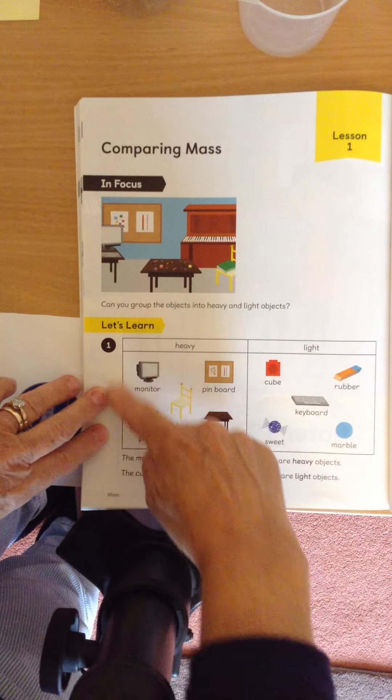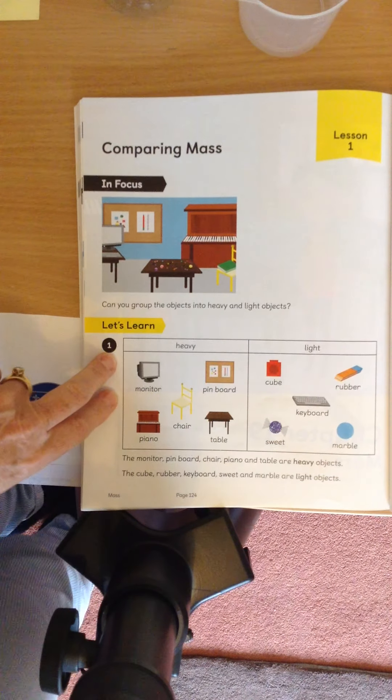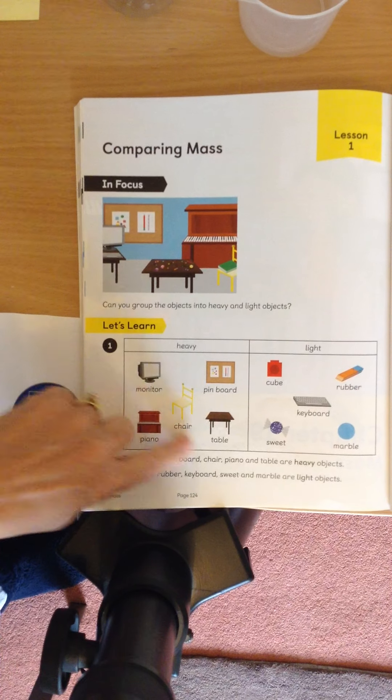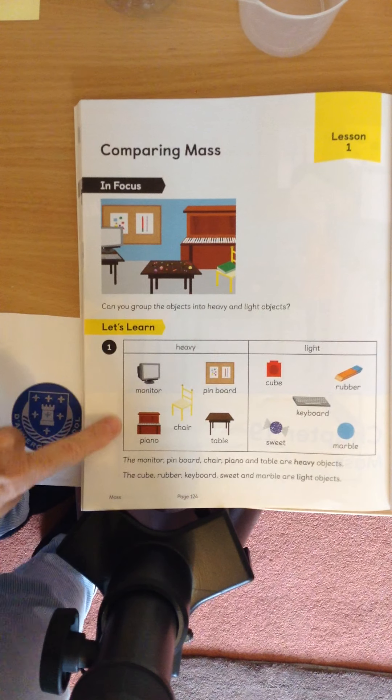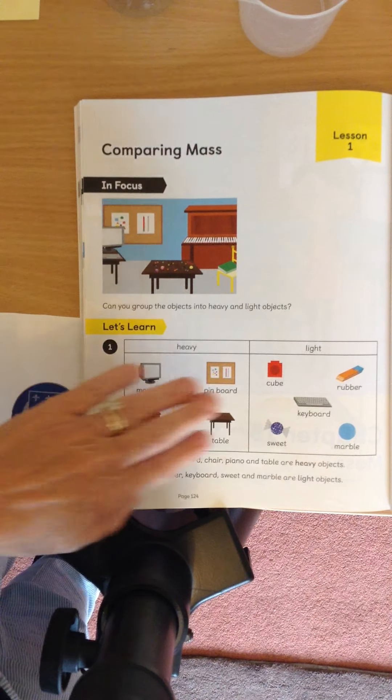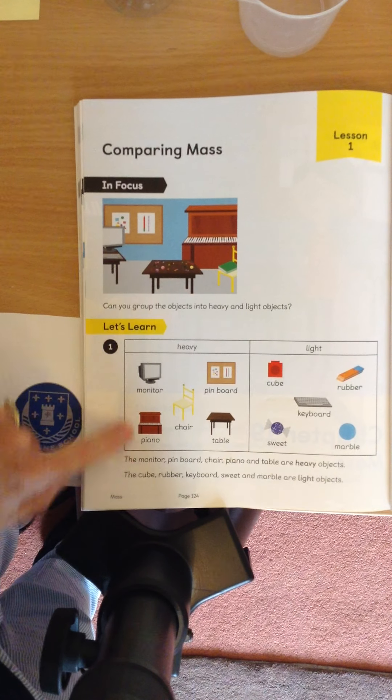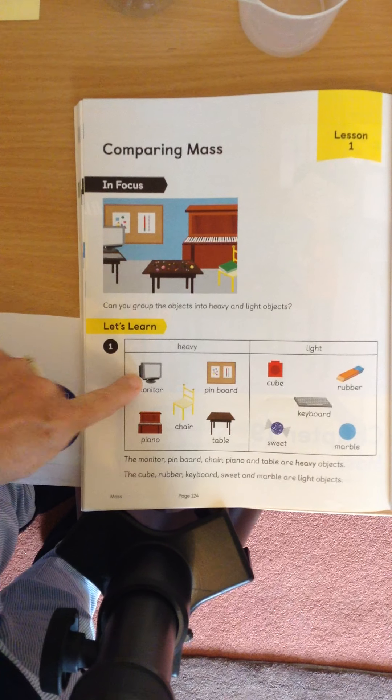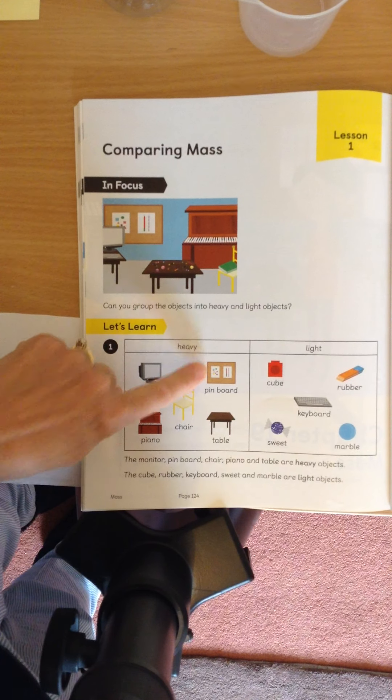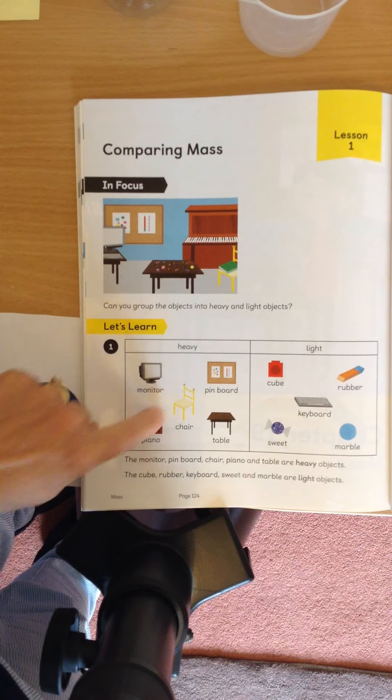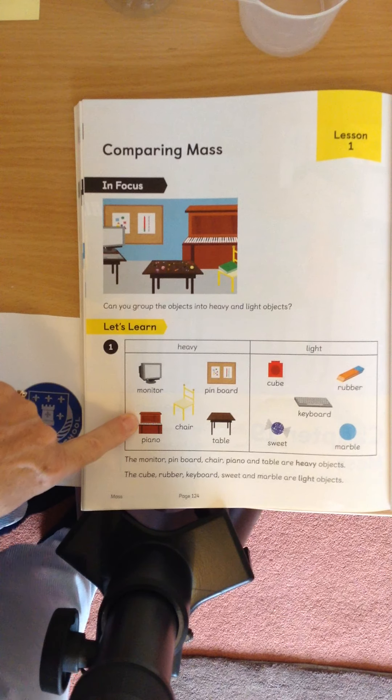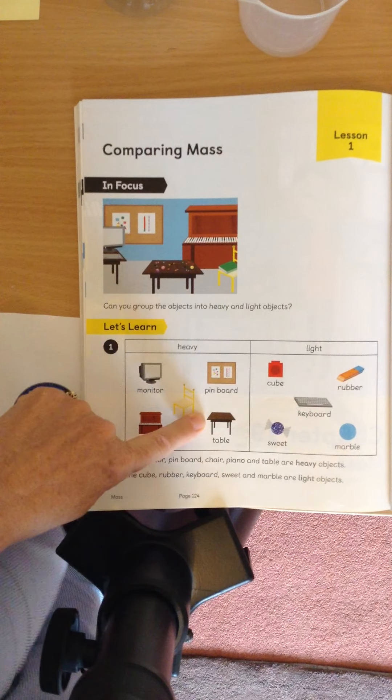Let's see how we've put them into a group here. Perhaps in your house, you could do a table like this and think about all the things that are heavy and all the things that are light. Right, so we've got in our heavy side, the monitor, that's heavy, the pin board is heavy, the chair is heavy, the piano is very heavy, and the table is heavy.